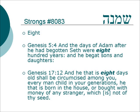The Hebrew word for 8 is Shmoneth. Genesis 5.4: In the days of Adam, after he had begotten Seth, were 800 years, and he begat son and daughter.